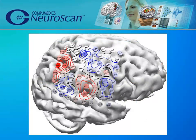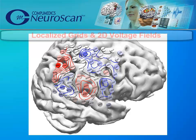In this example, the cortical grid electrodes extracted from the CT are measured and placed on the segmented cortex from the MRI. The colors show positive and negative voltages from the EEG recordings.